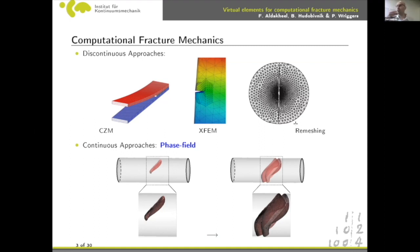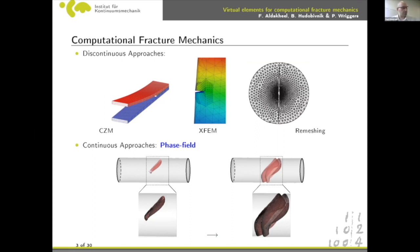In the phase field approach, we introduce a new auxiliary field called d, which ranges between zero and one. Zero means no fracture in that area, while one (shown in red) indicates fracture. For example, in a torsion problem of a bar, after applying torsion you can see a complex helicoidal fracture shape.